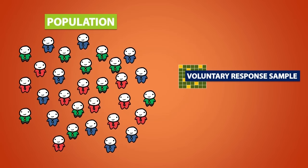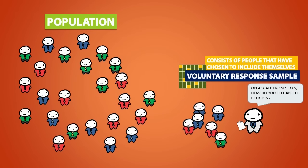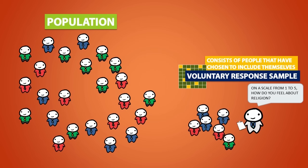Now a voluntary response sample consists of people that have chosen to include themselves in the sample. So the researcher lets people come to him. This is a biased sampling method because people with a strong interest for the survey topic are the ones who are most likely to respond, whereas the people who don't feel as strongly about the topic may not even care to respond.